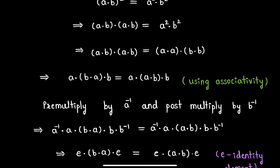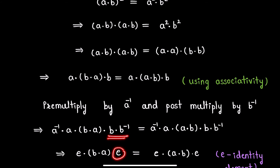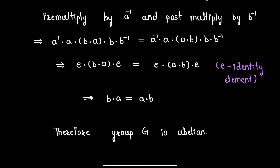In the next step, a⁻¹·a cancels to the identity e, and b·b⁻¹ also cancels to e. This gives us b·a = a·b, where e is the identity of group G.